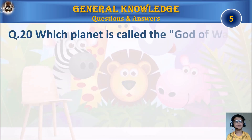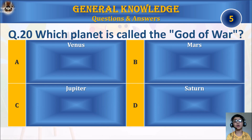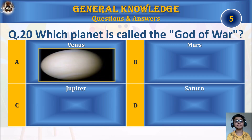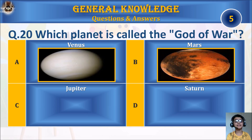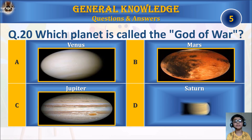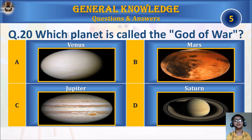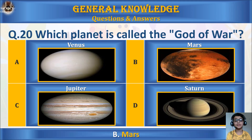Question 20: Which planet is called the God of War? A. Venus, B. Mars, C. Jupiter, or D. Saturn? Your time starts. The answer is B. Mars.